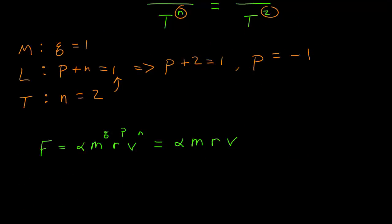and I can substitute in for q is 1, r, p is equal to negative 1, and n is equal to 2. So that means our force is equal to some constant times mass times v squared divided by r.